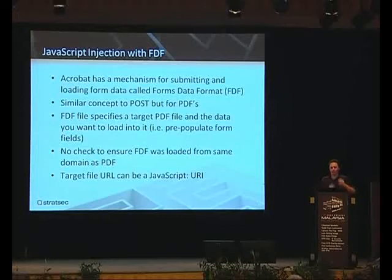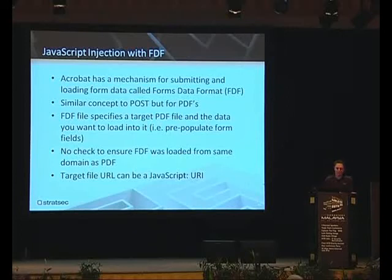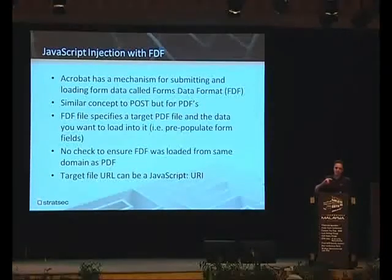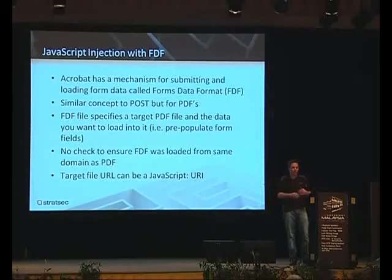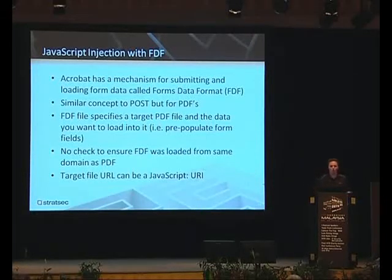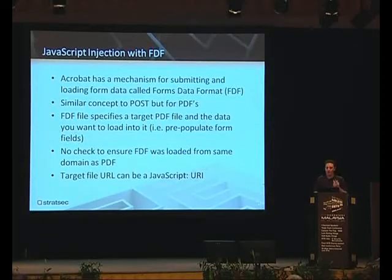You hit submit and it will send all of the form data encoded in a kind of semi-binary format. Inside that FDF you can specify a target PDF file and the data you want to load into that target PDF file. The point of FDF is basically to pre-populate form data — so you could give someone a form and it would fill out their name and address or something like that. But there's no check to ensure that the FDF is loaded from the same domain as the PDF. And the other thing is that the target file URL can be a JavaScript URL — you can do some pretty interesting stuff with that.